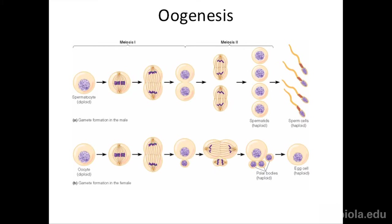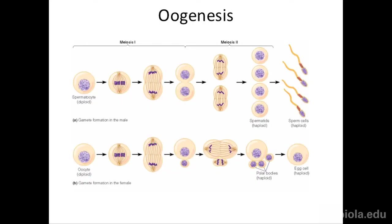The polar body won't go on to become an egg. When you make eggs, even though you go through both rounds of meiosis creating four unique chromosome combinations, only one survives to actually become the egg. This brings up the first theme of differences between eggs and sperm: sperm are cheap, eggs are expensive. You only get one egg for every four sperm.